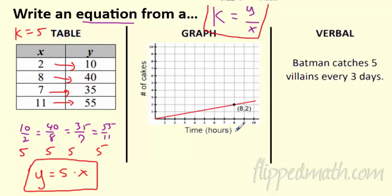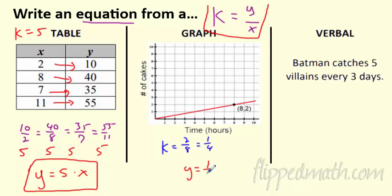What if it's a graph? Find k — no problem. It's my y over my x, so it's going to be 2 over 8. I'm going to reduce that to 1 over 4 if you simplify. That's my k, so my equation is going to be y equals one-fourth times x. There it is right there. Super cool.